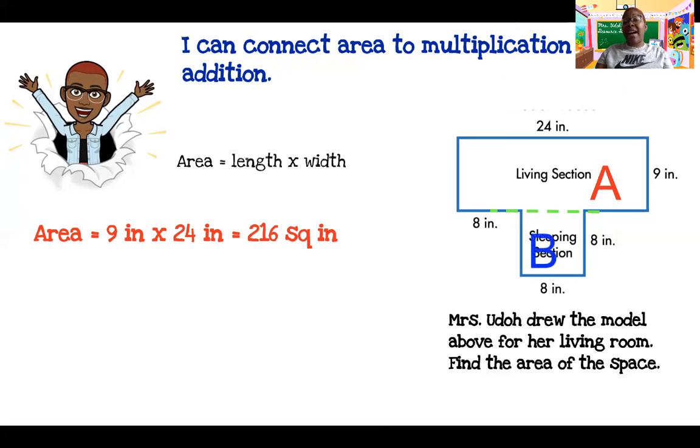So we found the area of the living room. We next have to find the area of the sleeping section. How do I find the area of the sleeping section? That's right. I multiply the length times the width. And what is the length and the width of the sleeping section? Did you say eight inches times eight inches? If you did, you're absolutely correct. And eight times eight is 64.